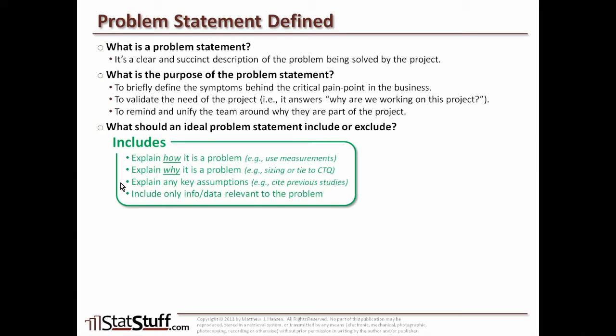We also want to explain any key assumptions that might be made within the project, or at least key assumptions we might have in defining this problem statement. If there's something like a benchmark or a previous study that's been done and we're using that to help explain why we think it's a problem, then state it as such. However, if there are just some general assumptions, those should not be stated in the problem statement. But if there's anything critical that helps define part of why we think it's a problem, we should identify that and make sure we label it as an assumption. Finally, include any relevant information around the problem — only stuff that's really critical for context around the pain point we're trying to define.